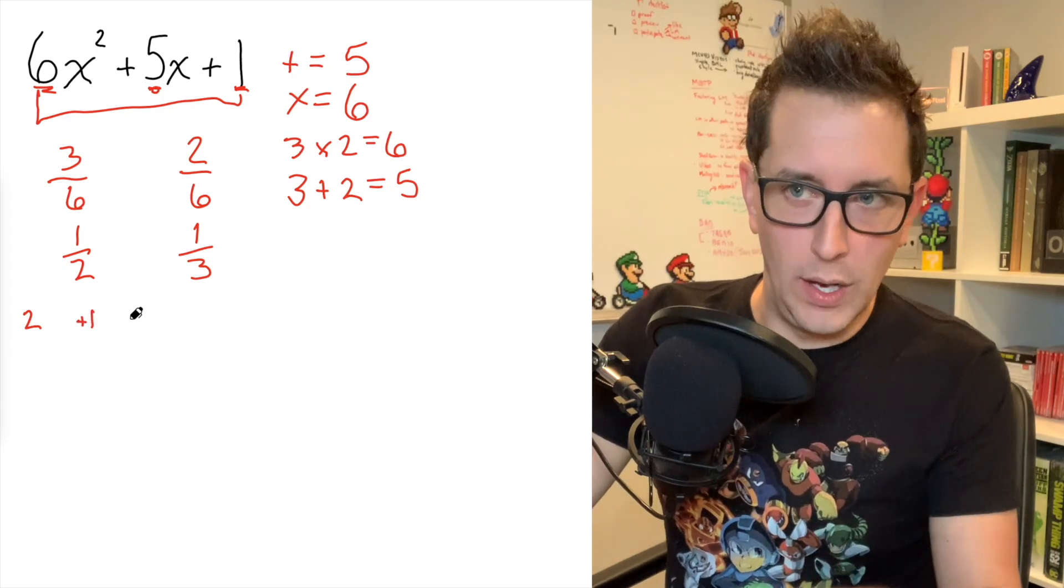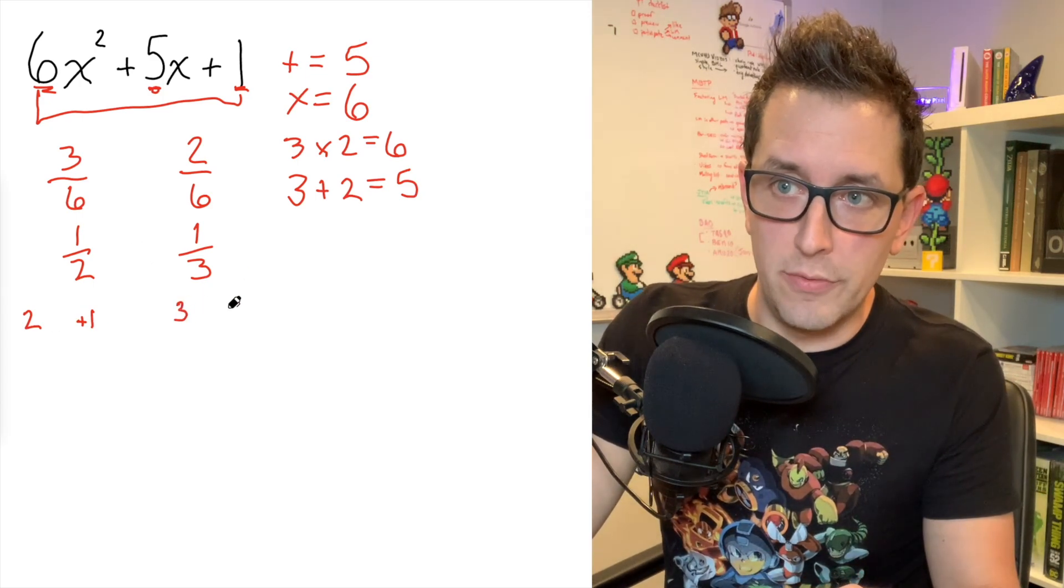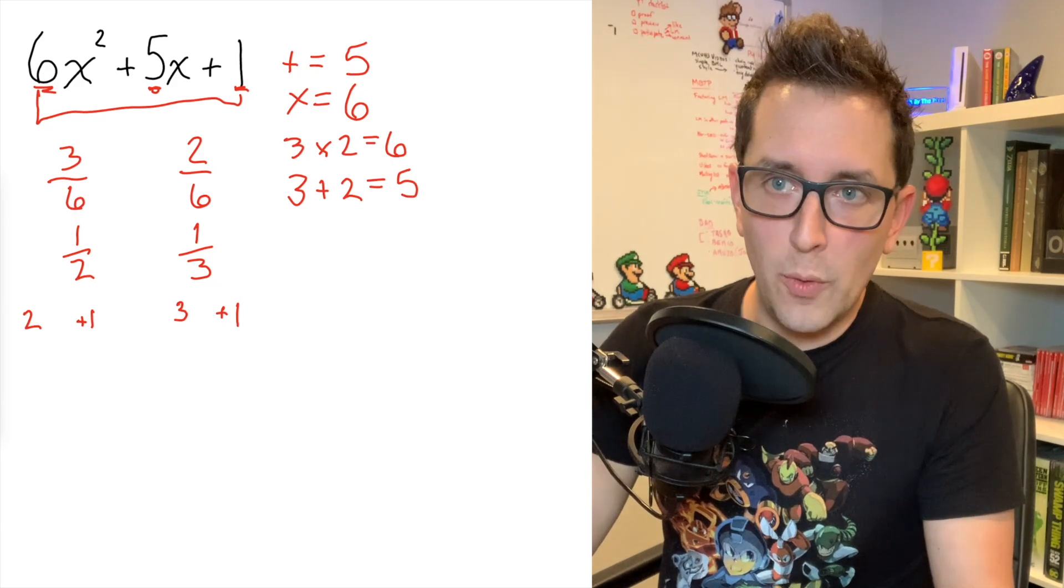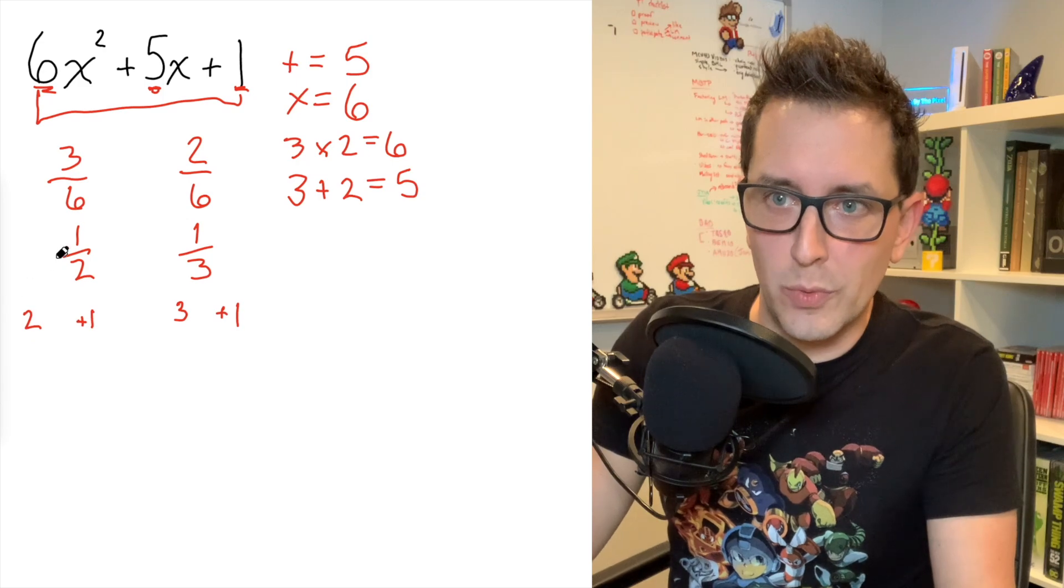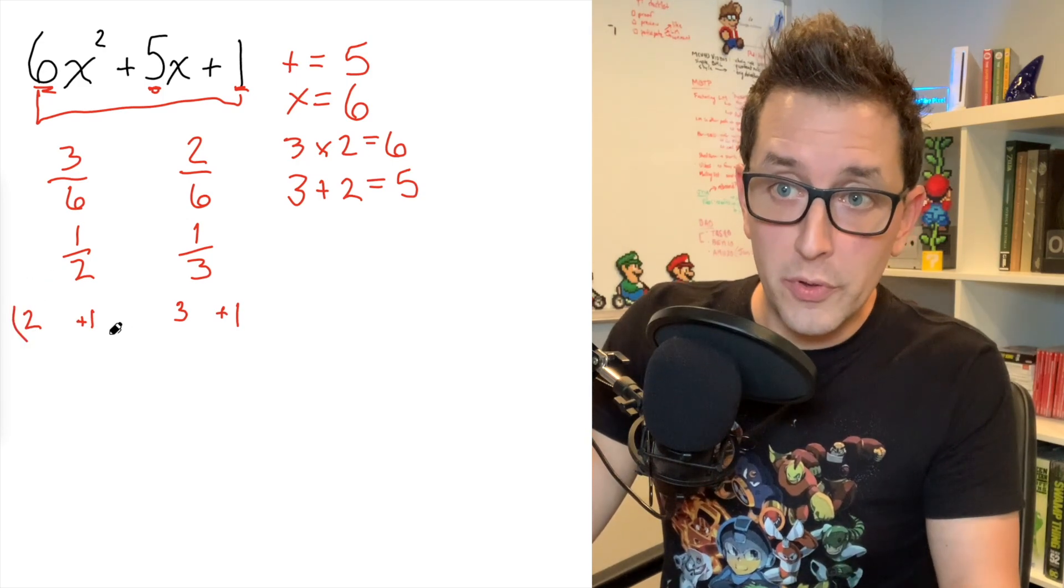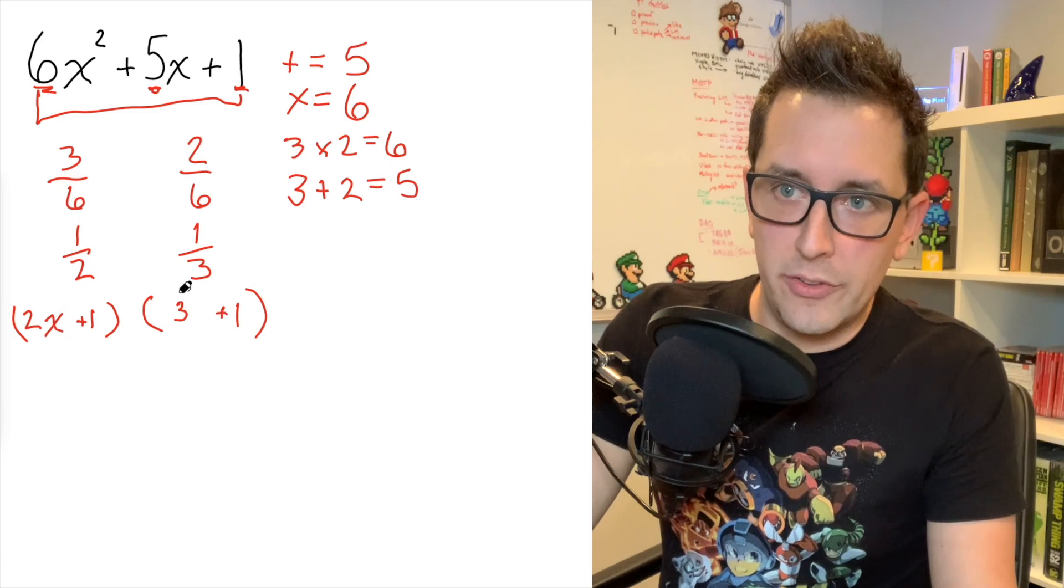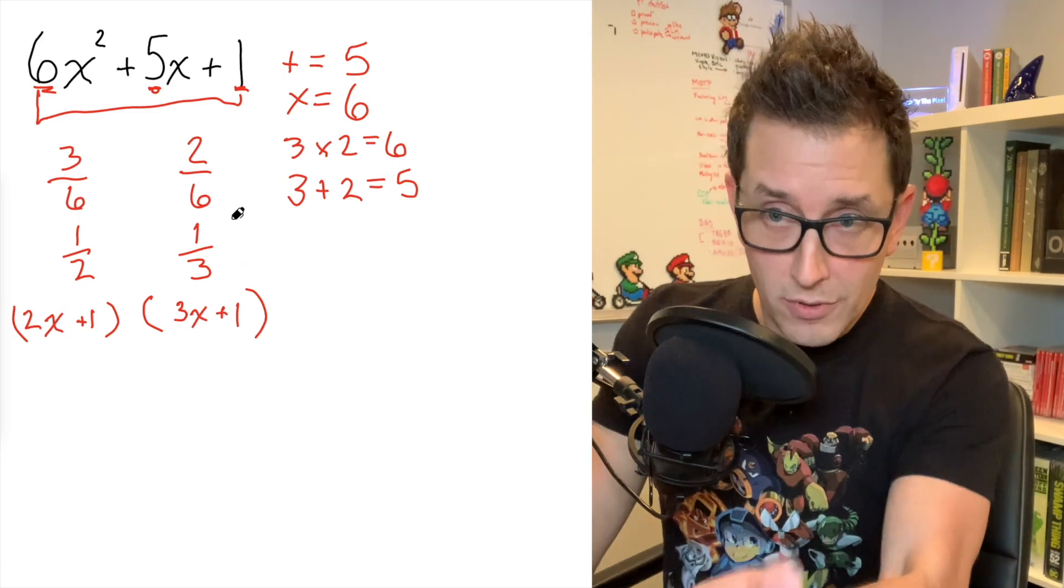And you'll see why in a minute. And we're going to do the same thing for our second fraction. We're going to have our denominator of three and next to it, we're going to have our numerator of positive one. Now, what you've done is you've just created two random pairs of numbers that don't seem to really mean anything. So what we're going to do is put some brackets around those random pairs of numbers, and we're going to stick an X next to the first number. And what you're going to see is that you ended up with factored form.